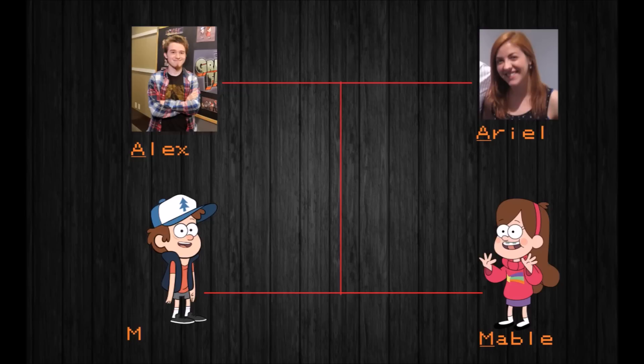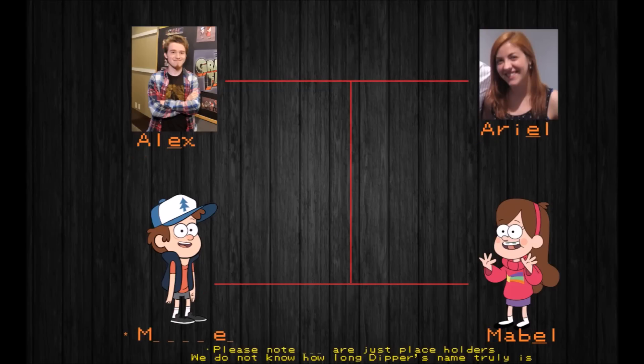So now, if we compare the names again, Alex, A-L-E-X, and Ariel, A-R-I-E-L, what else do they have in common? Well, they both have an E as the second-to-last letter in their names. And Mabel has an E as the second-to-last letter as well. So, maybe that can narrow us down even more to what Dipper's real name is. It could start with an M, and it has a second-to-last letter B and E.